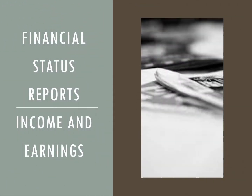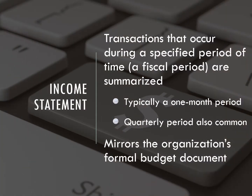Next, we're going to step into income and earnings reports. An income statement shows the transactions that occur during a specified period of time, and are summarized typically on a one-month period or a quarterly period. This mirrors the organization's formal budget document in total as far as a year-end document.